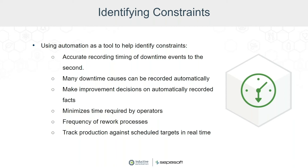Using automation to collect this data and quickly calculate your OEE is by far the best and most accurate way to calibrate and measure improvement efforts. With automation, you can have accurate recording of downtime to the second — your PLC tells you when you're down and back up. You can identify downtime causes automatically rather than guessing. You're empowered to make improvement decisions based on automatically recorded facts rather than judgment calls. You minimize operator time managing paper, maximizing their time running equipment, and you're able to track production against scheduled targets in real time.